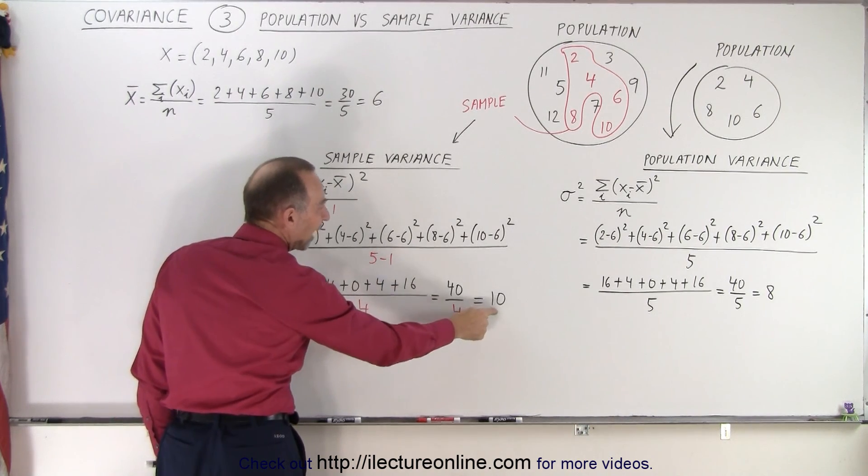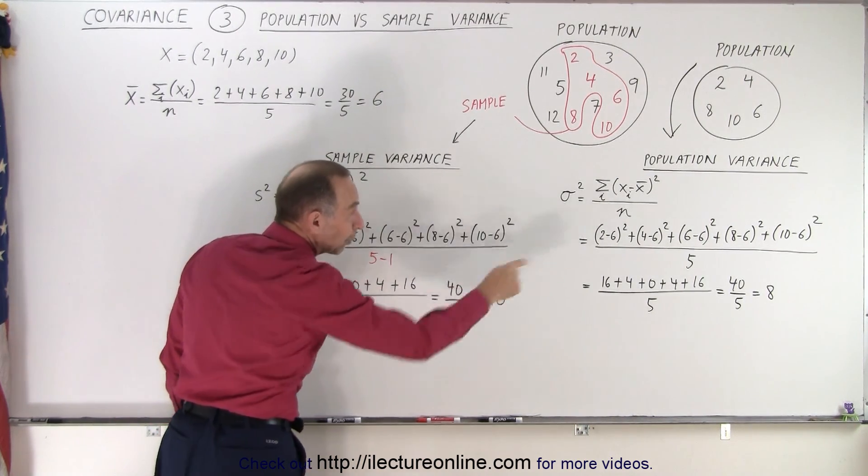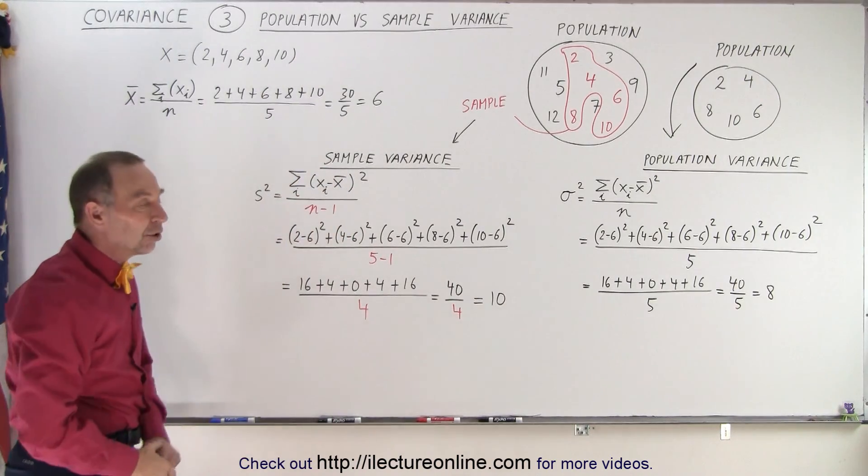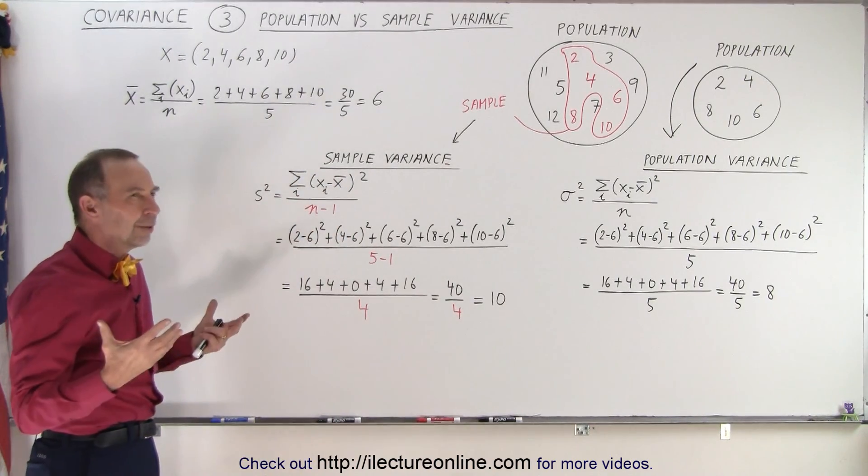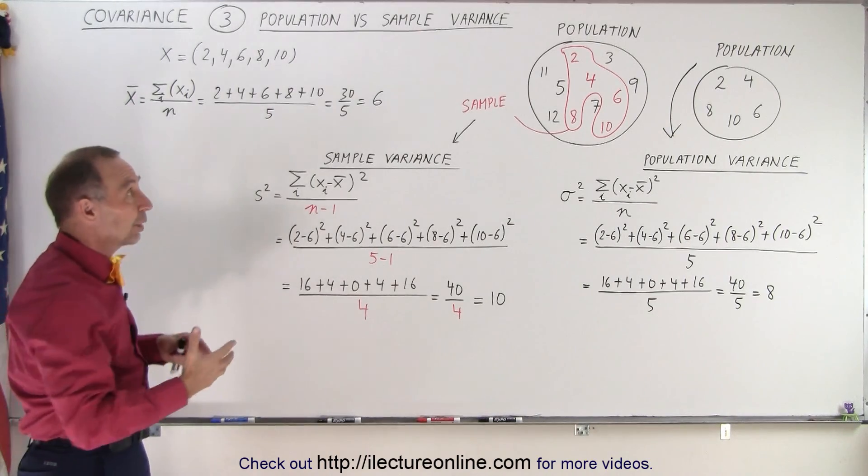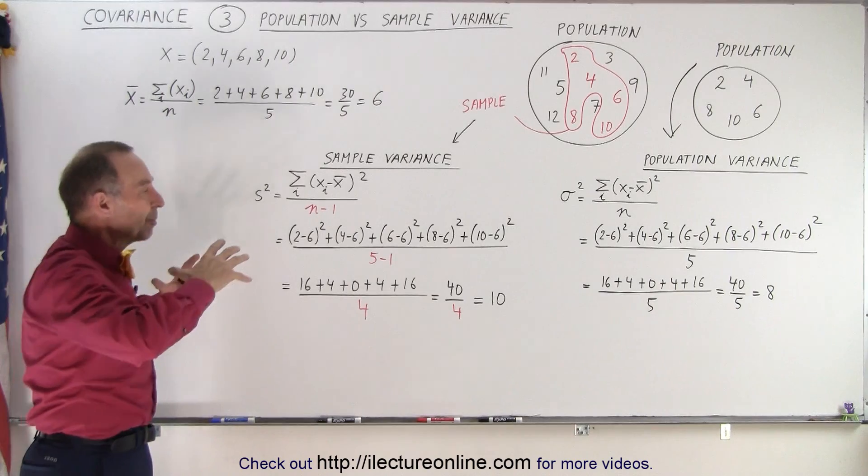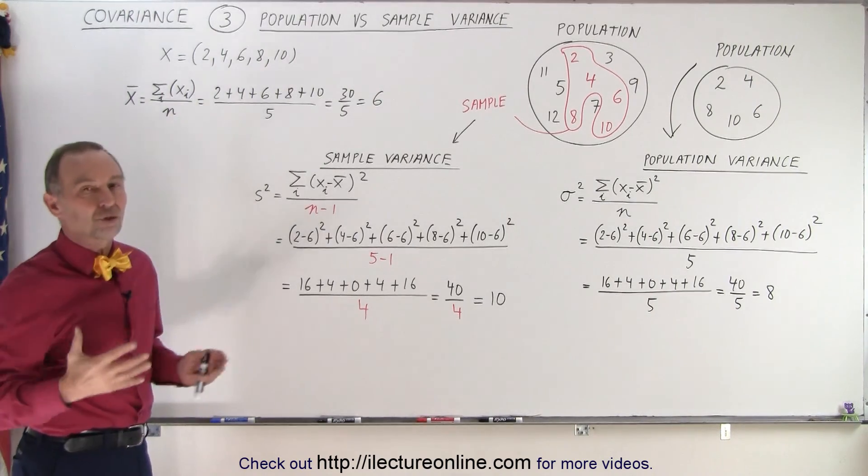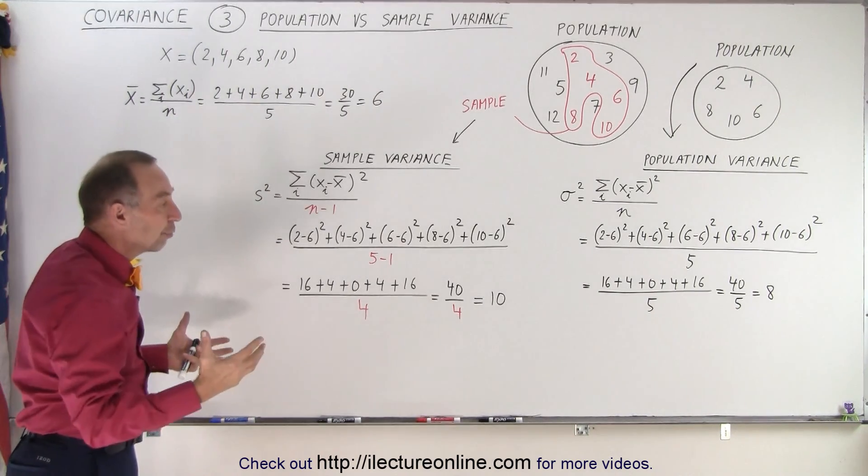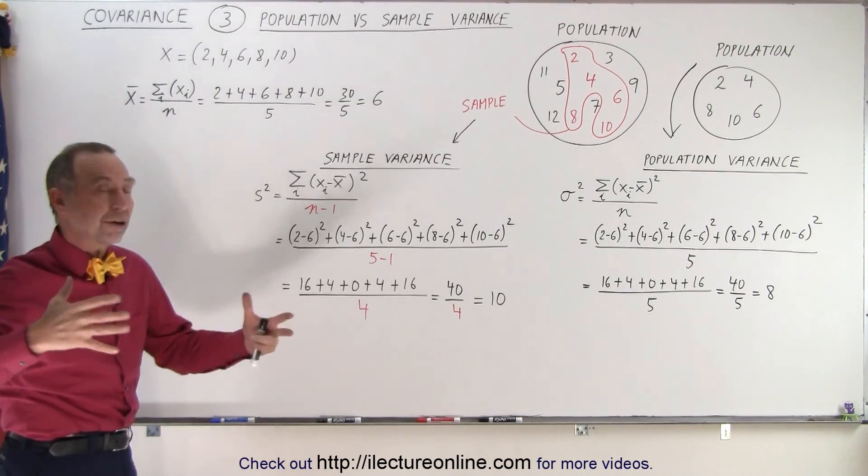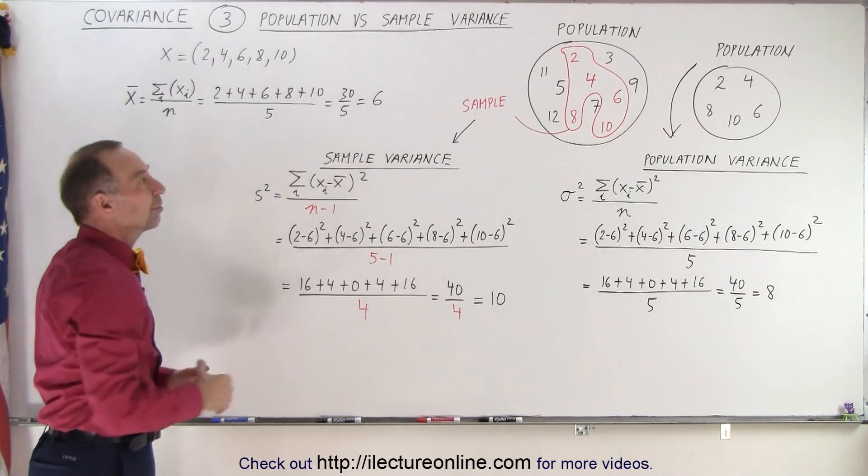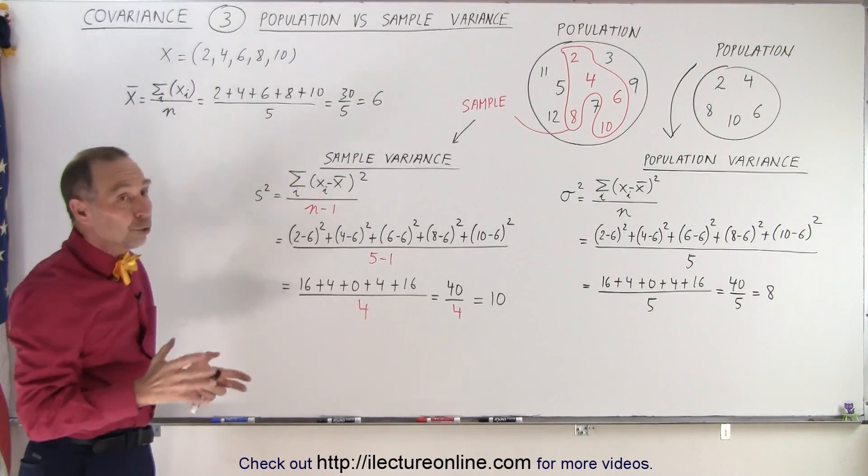And notice that causes us to have a larger variance than what we calculated before. The larger variance just says, look, the sample may not accurately reflect what the population is, and therefore we just kind of move the numbers out just a little bit, just to make sure that we have accounted for potentially a larger variance if we had taken more numbers from the population.